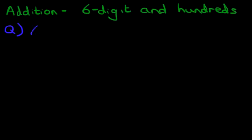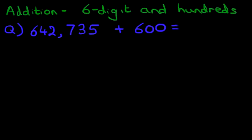What is six hundred and forty-two thousand seven hundred and thirty-five plus six hundred? Six hundred and forty-two thousand seven hundred and thirty-five plus six hundred.